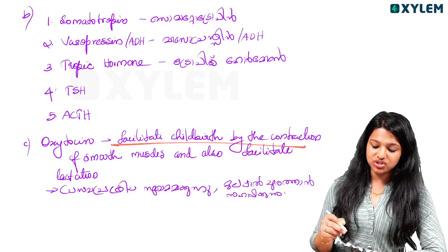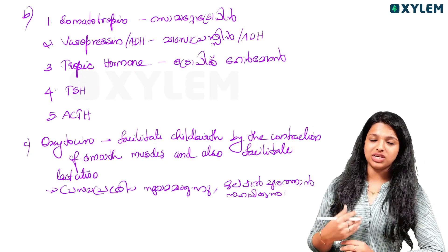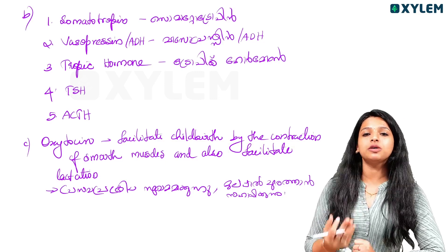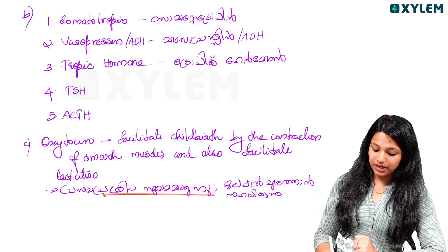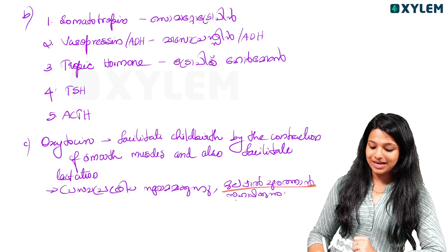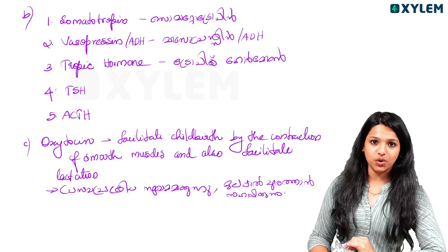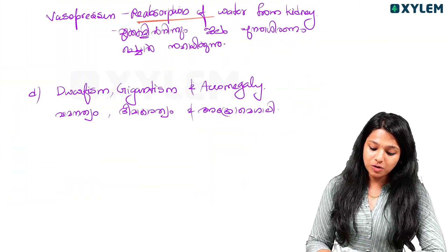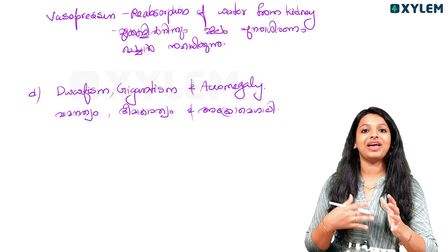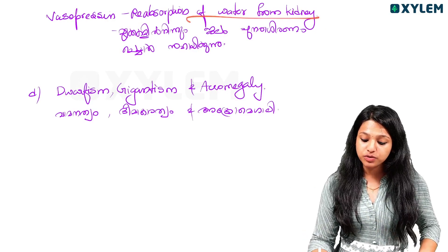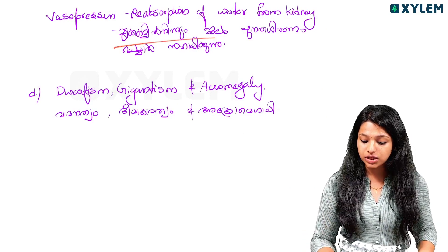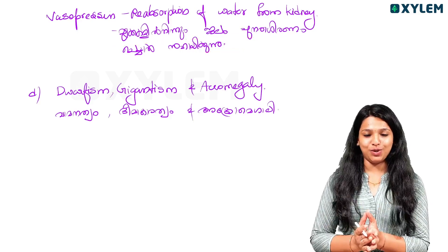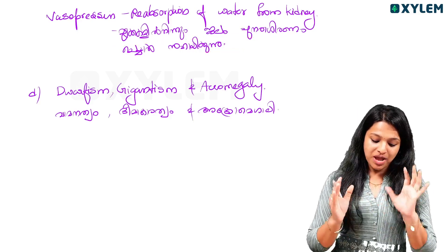I am talking about oxytocin and vasopressin. It is a facility for child birth by the contraction. It is a facility for milk production. That is oxytocin. If vasopressin comes to the same question, it is a facility for water reabsorption from the kidney. Two functions.